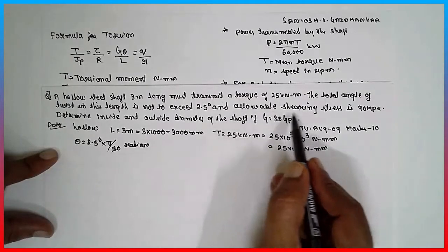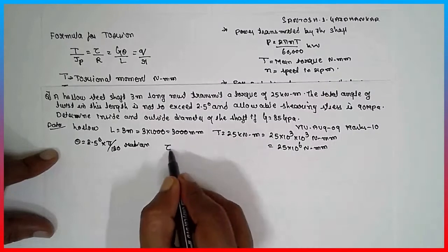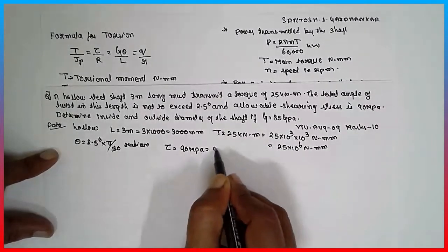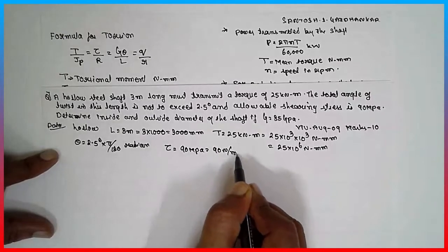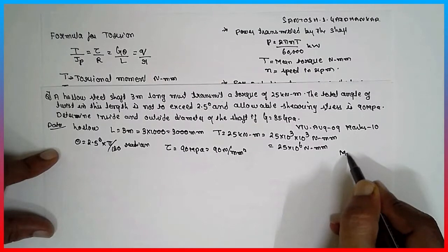And the allowable shear stress is 90 mega Pascal, shear stress, that is tau given 90 mega Pascal, which is nothing but 90 Newton per mm square, because mega Pascal is nothing but Newton per mm square.